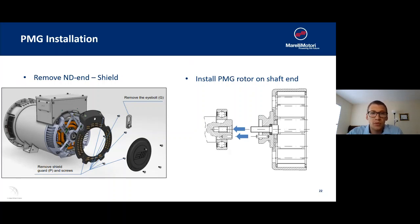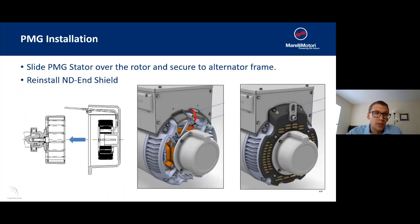From that point, after we've installed the exciter rotor, we're going to slide the PMG stator over the rotor and secure it to the alternator frame. From this point, we're going to run the wires from the PMG into the terminal box where we're going to connect them to the AVR, and then we just have to reinstall the non-drive-end shield of the generator just to clean it up a little bit.